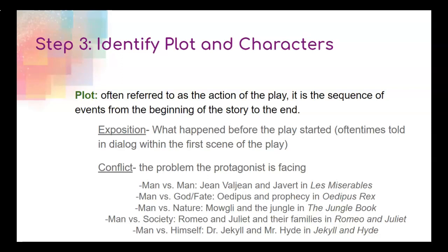Our last and most interesting conflict type is man versus himself — where a character has something about them that gets in the way of what they want; they self-sabotage. The most dramatic example is Dr. Jekyll and Mr. Hyde in Jekyll and Hyde. They're the same person — Dr. Jekyll makes a potion, drinks it, and turns into Mr. Hyde, who is not a great guy. Dr. Jekyll then has to find a way to kill the monster within himself, which makes for some pretty interesting drama.